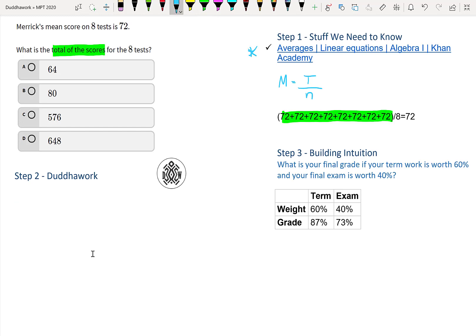So by plugging in the numbers in the formula, we get something like this: we get that the formula is M is the total over n. Well, we know Merrick got a 72. And T, that's what we're trying to find. And the total number of tests is eight. So therefore, if we solve for T, the total, it's just eight times 72.